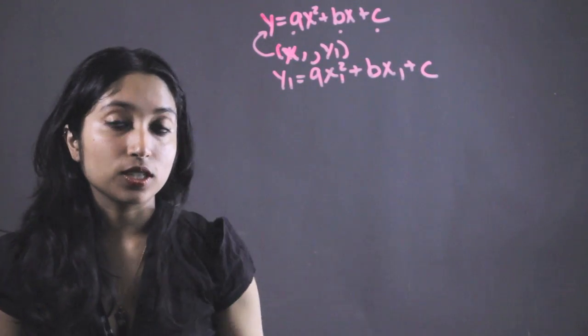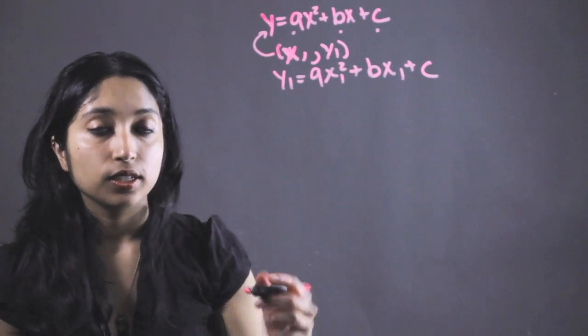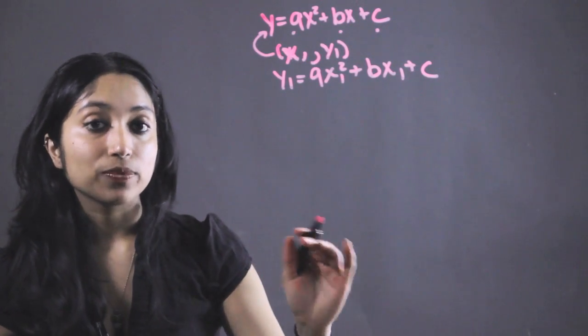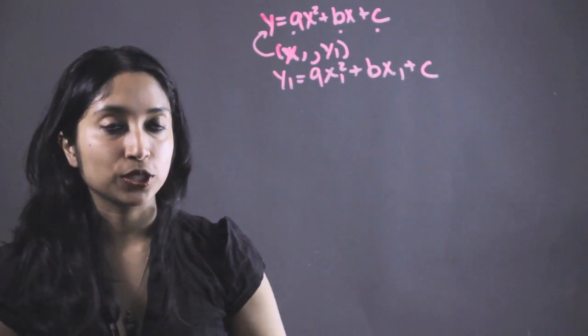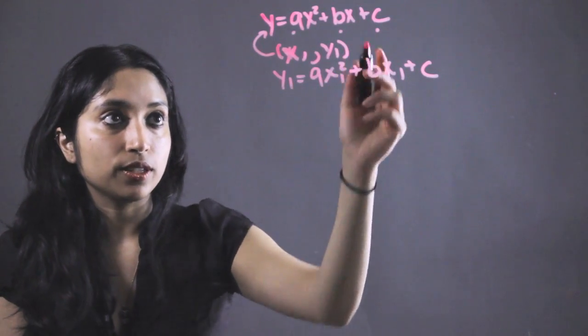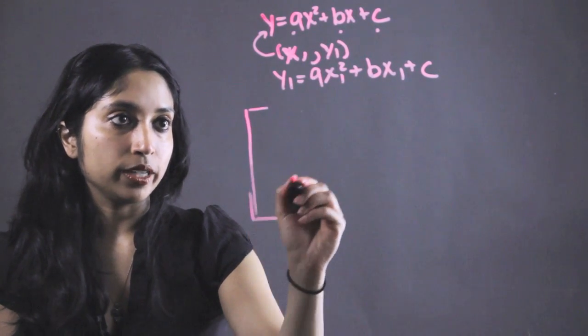So this is one equation, and we would just do that with two more points to get three equations. And that's the first step. The second step is to take those three equations and turn them into matrices so we can solve for these three unknowns. I'll show you how to do that right now by writing out our matrices.